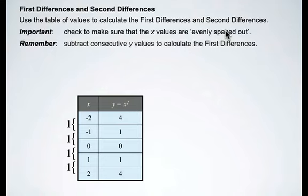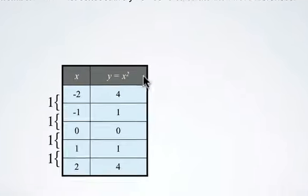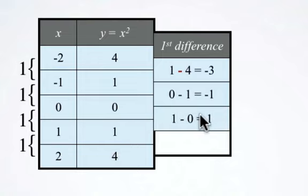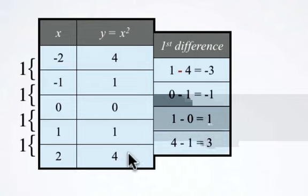Remember, subtract consecutive y values to calculate the first differences. So our first difference is 1 minus 4 is negative 3. 0 minus 1 is negative 1. 1 minus 0 is 1. And 4 minus 1 is 3. Notice that we subtracted consecutive y values to calculate the first differences.